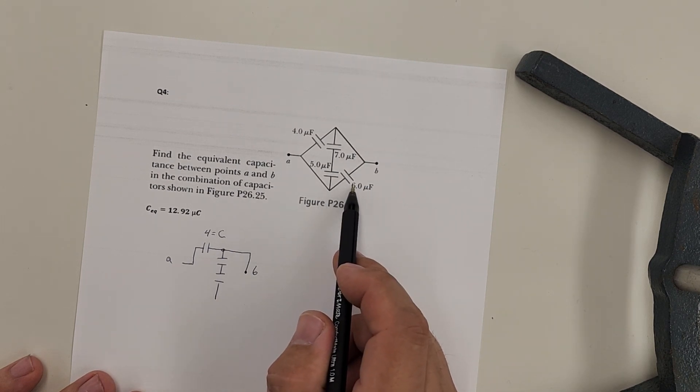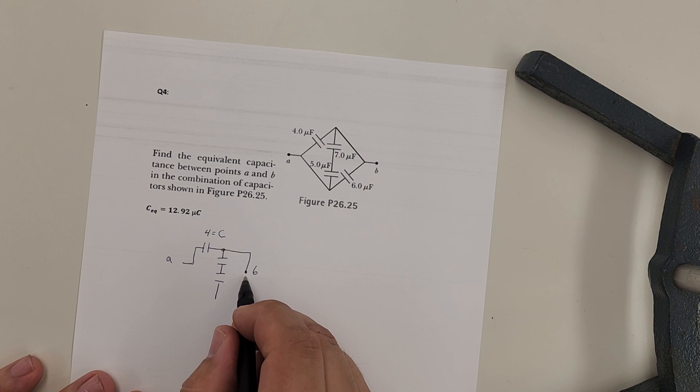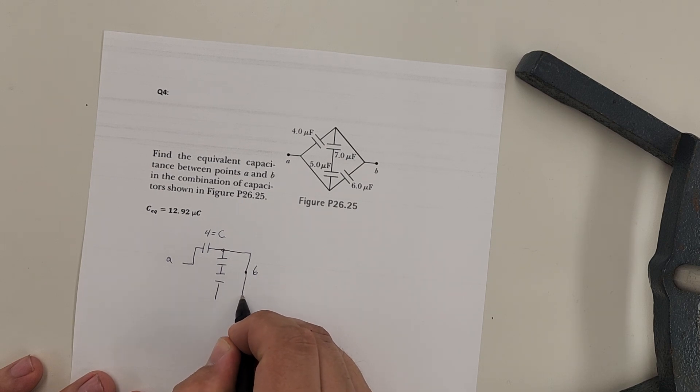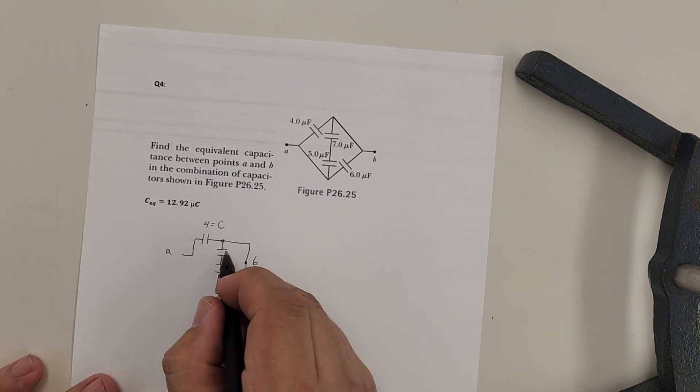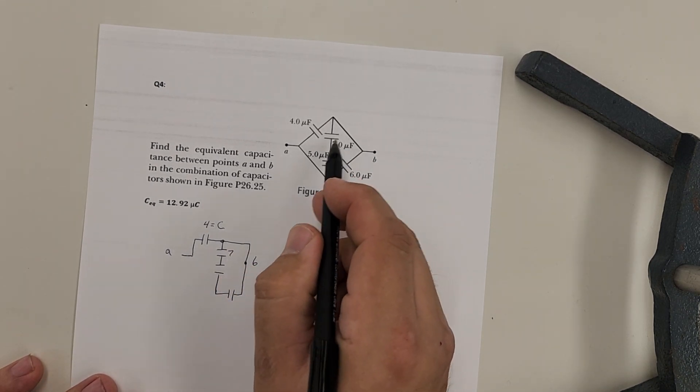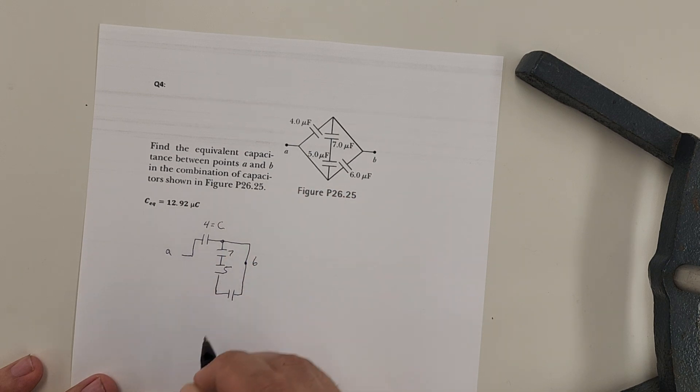Then there's another capacitor between point B and that junction, so I'm going to bring that down, and I'm going to put that other capacitor in here just before that junction. This top one here was a seven, and the bottom one here was a five. This one is a six, and then from there to there it just connects back to A.